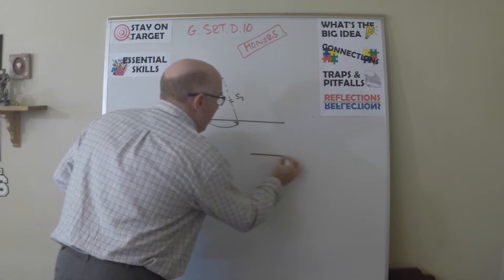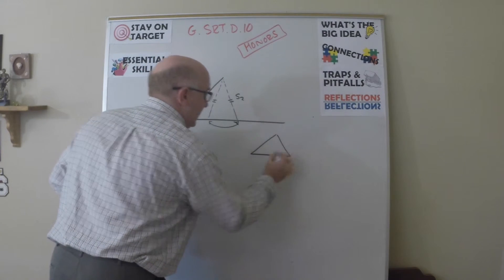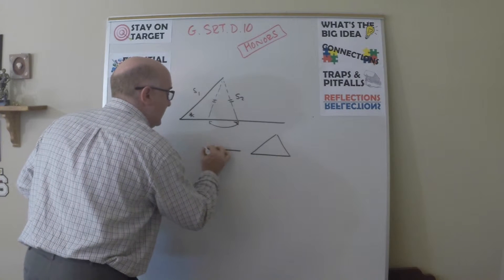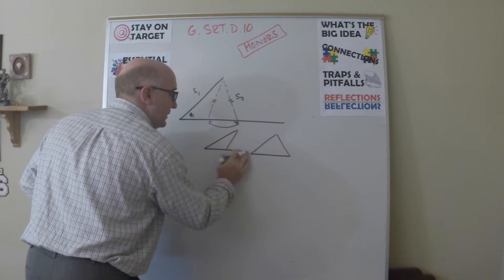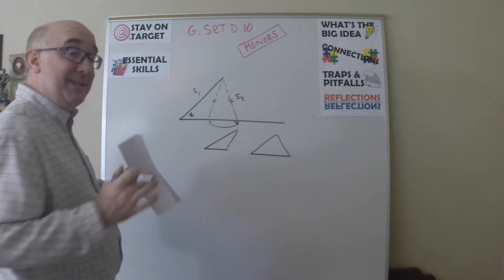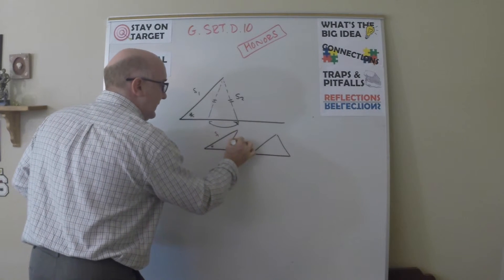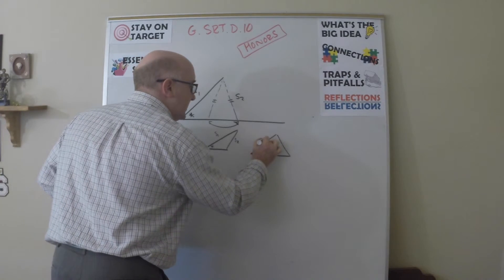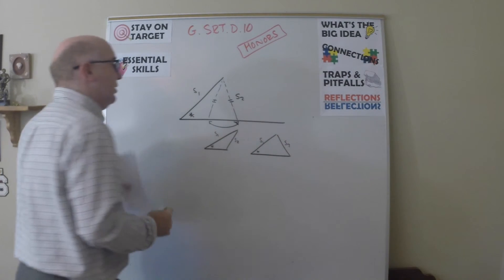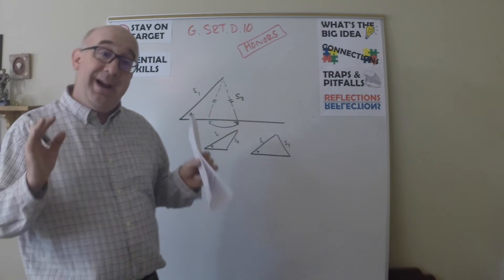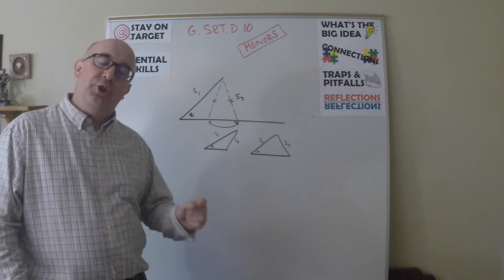One causing a triangle that might look like this, another causing a triangle that might look like this. And still be the same three pieces of information. Here are two triangles formed by identical information but are not congruent.